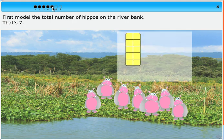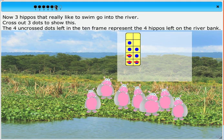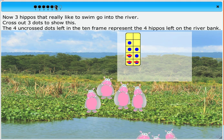First, model the total number of hippos on the riverbank. That's seven. Now, three hippos, that really like to swim, go into the river. Cross out three dots to show this. The four uncrossed dots left in the 10-frame represent the four hippos left on the riverbank.